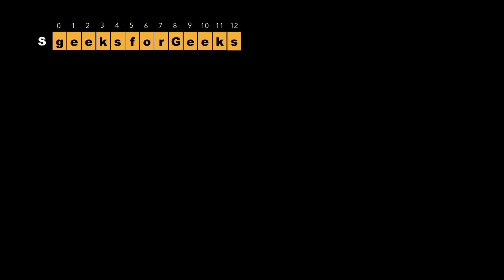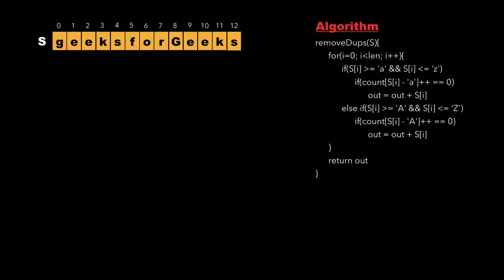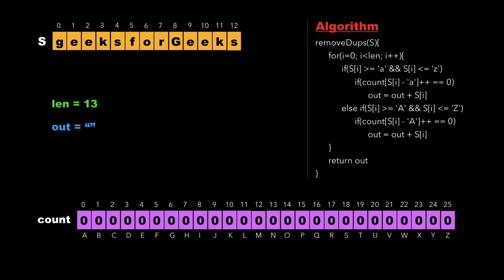Let's consider the same example as given in the question, where the string s is 'geeksforGeeks', where the second G is capital. The right side of the screen shows the algorithm, which contains a function 'removeDuplicates' whose argument is the string s. We declare a variable 'length' initialized to the length of the string, create an empty string called 'out', and create a count array of size 26 to store the frequency of characters.